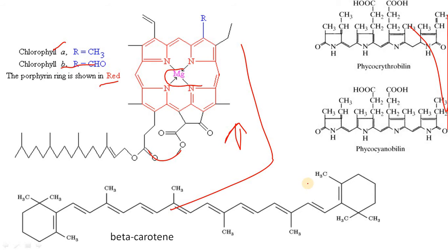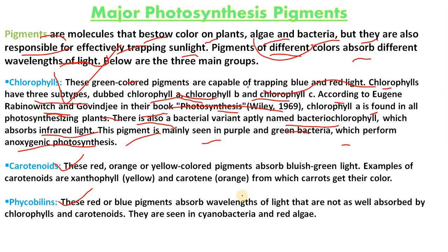Bacteriochlorophyll viridine is present in green bacteria. Chlorophyll mainly absorbs violet, blue, and red parts of the spectrum and helps in photosynthesis. Chlorophyll b also helps in storage of starch as reserve food.